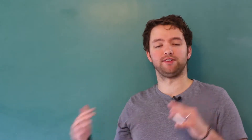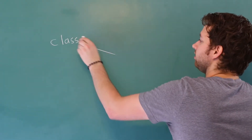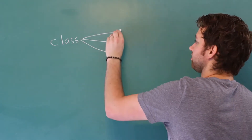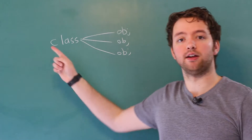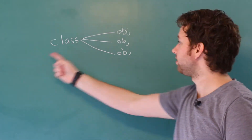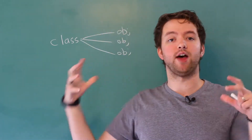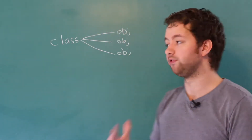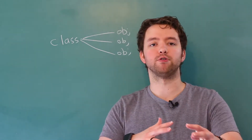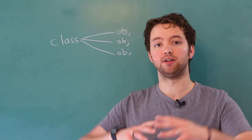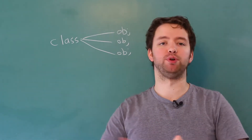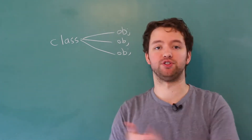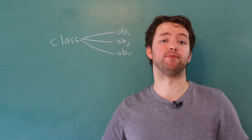So when you visualize object-oriented programming, you might think of something like this. You have a class, and then you make instances of this class, which are known as objects. When you define a method in the class, every time you instantiate this class into an object, that method is made available. For example, you might have a user class, and one of these methods might be "talk" — that's going to do an output saying the person's name and their information or something like that.